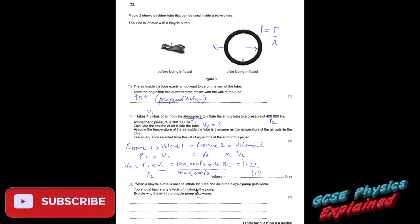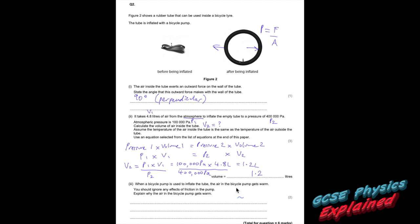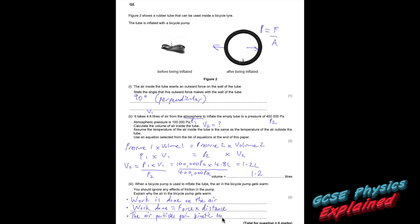Part three. When a bicycle pump is used to inflate the tyre, the air in the pump gets warm — ignoring friction. Explain why. When you're pumping up the air, you're doing work on the air. Work done equals force times distance. When work gets done, energy gets transferred. So the gas particles will gain kinetic energy, and the faster the particles are moving, the higher the temperature.